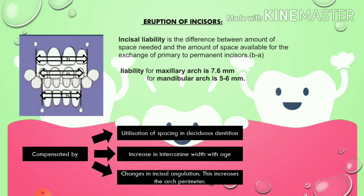Second, there is an increase in intercanine width with age. As the jaw broadens, intercanine width increases, creating additional space utilized by the incisors. Third, there are changes in incisal angulation — in deciduous dentition, incisors are vertically aligned, whereas in permanent dentition they are slightly labially inclined, which increases the arch perimeter. So incisor liability is compensated by: utilization of deciduous spacing, increasing intercanine width with age, and changes in incisal angulation.